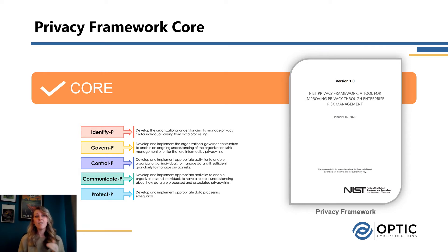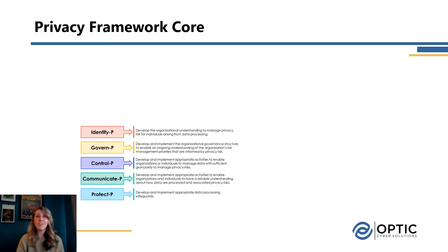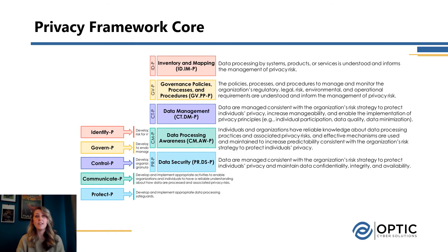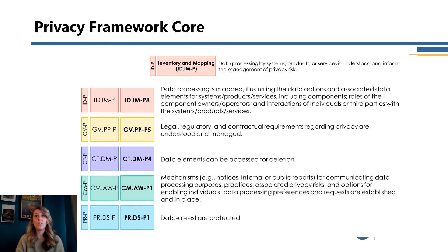The five functions are identify, govern, control, communicate, and protect. Those are the high-level ideas that we need to consider when building out our privacy program. Those functions can then be broken down into categories — still a high-level concept — but we've got a hierarchy building from functions to categories and then ultimately to subcategories at the lowest level.